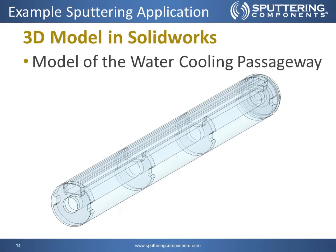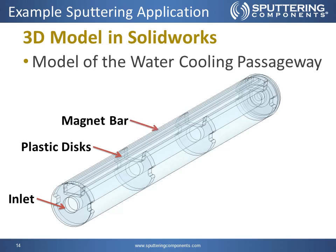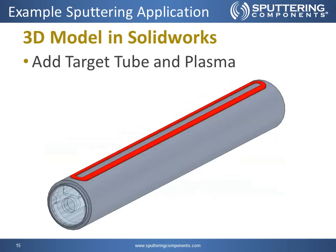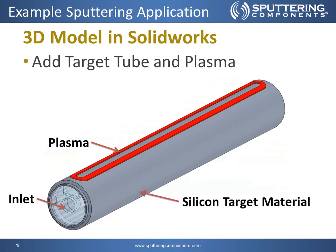Next we have our 3D model created in SolidWorks. This is a model of the water cooling passageway. We have the inlet in the lower left, four plastic discs along the length of the inside of the target, the magnet bar pointed upwards, and the outlet on the right-hand side. Next, we add the target tube and plasma. We still have our inlet on the lower left-hand side, then we have our plasma on the surface of the target material right above the magnet bar. We have our silicon target material on the outside and our stainless backing tube on the inside.